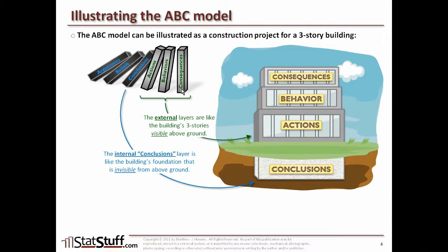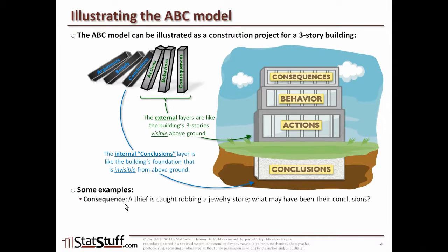For the first example, say the consequence is that a thief is caught robbing a jewelry store. Even though we cannot see the conclusions — the invisible foundation — we can make reasonable assumptions. We can probably conclude the thief thought they could get away with it. If they didn't believe they could, they would never have taken the action, exhibited the behavior, and suffered the consequence that is visible to us.